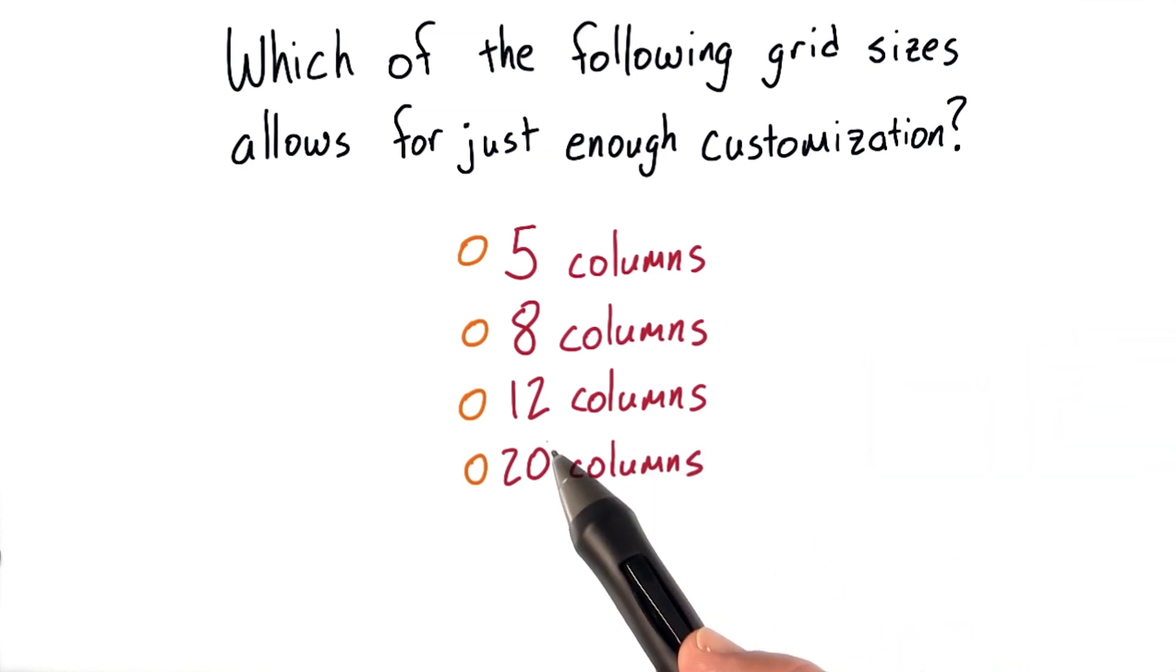With 12 columns, we know that 2, 3, and 4 all divide into 12 evenly. Meaning that we can have 2 even columns, 3 even columns, or 4 even columns on the screen. So this seems like a pretty good answer.